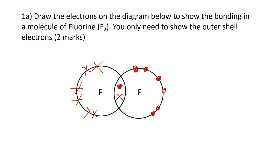If you look now, the left hand fluorine atom has got seven crosses of its own plus the one it's sharing. The right hand atom has got seven dots of its own plus the cross that it's sharing. We can also show this covalent bond — this pair of shared electrons — with a stick, so we could write F-F, and that stick between the two fluorine atoms represents a pair of electrons being shared between the atoms.